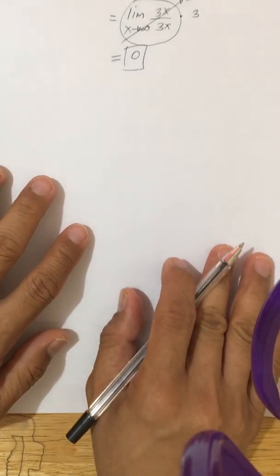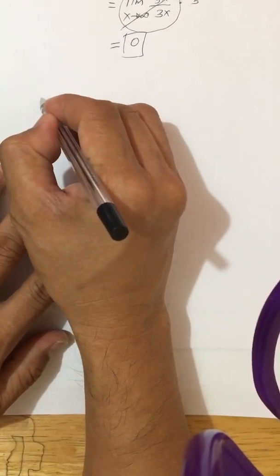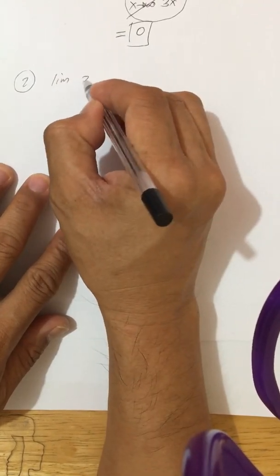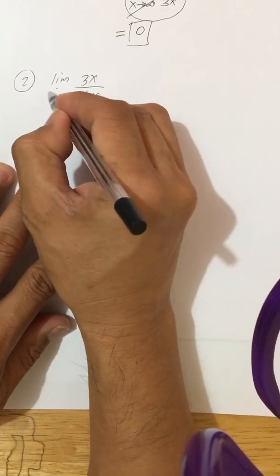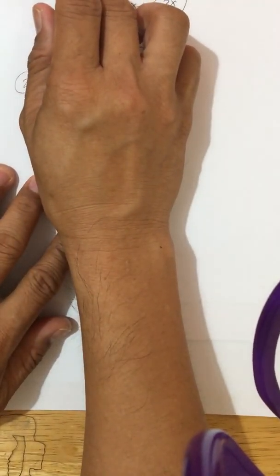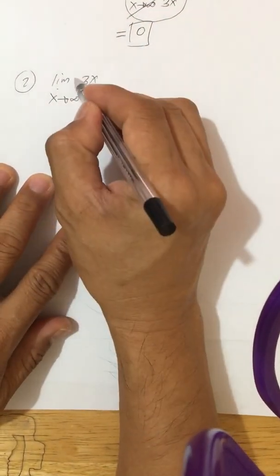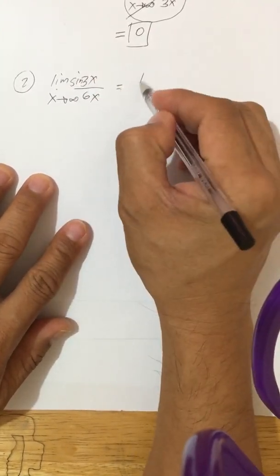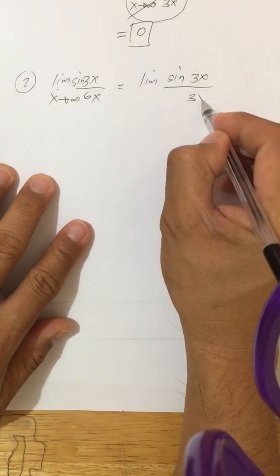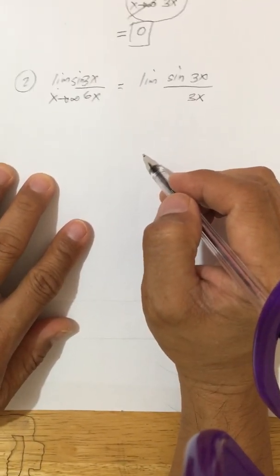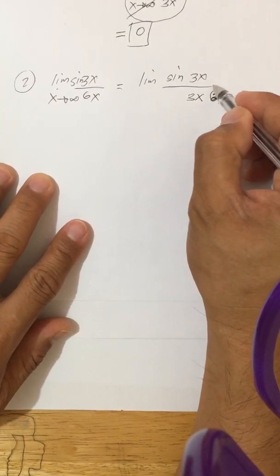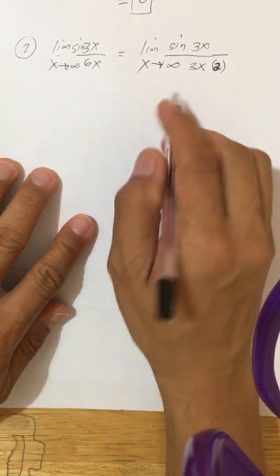Example number two: if you are given the limit of sine 3x over 6x as x approaches infinity. Again, you have to produce the same form — after sine we have 3x, and the denominator should also be 3x. So we factor the denominator: 6x equals 3x times 2.